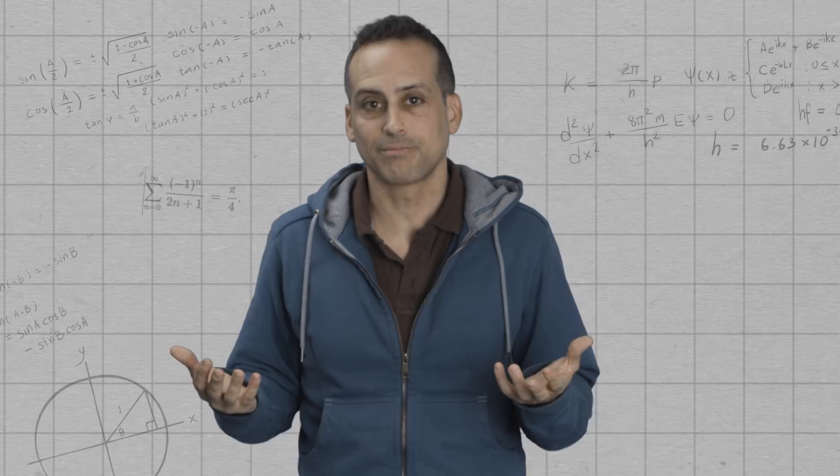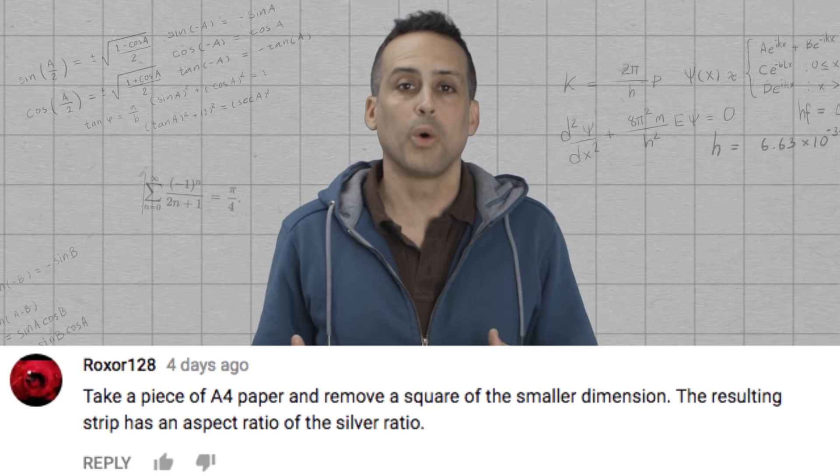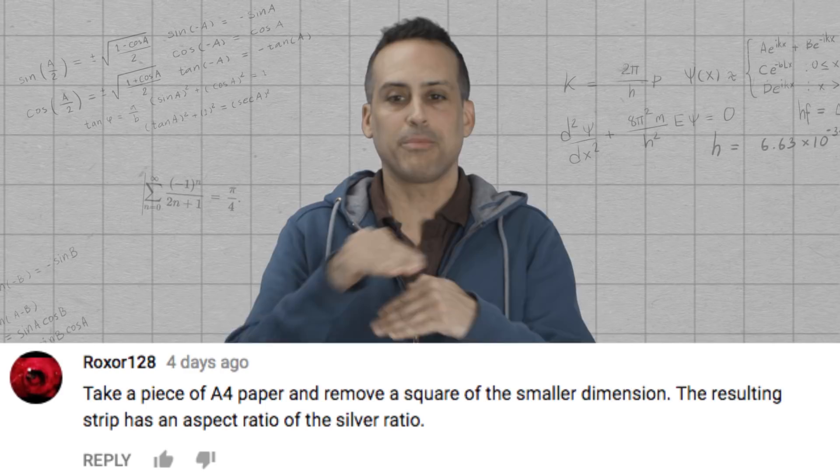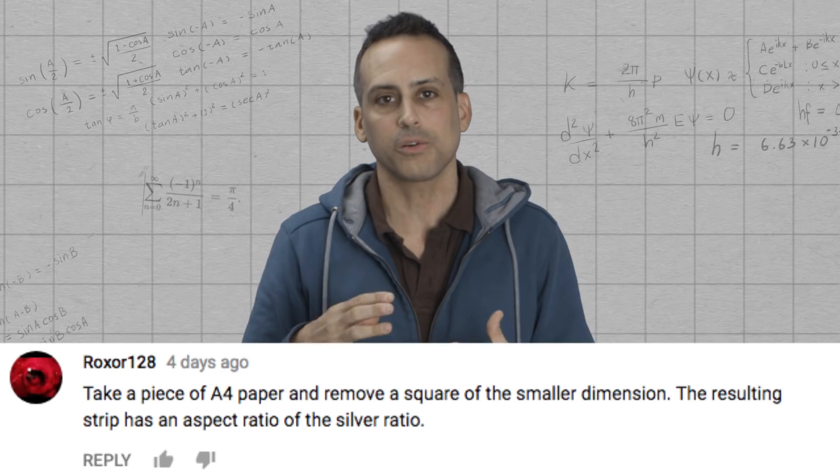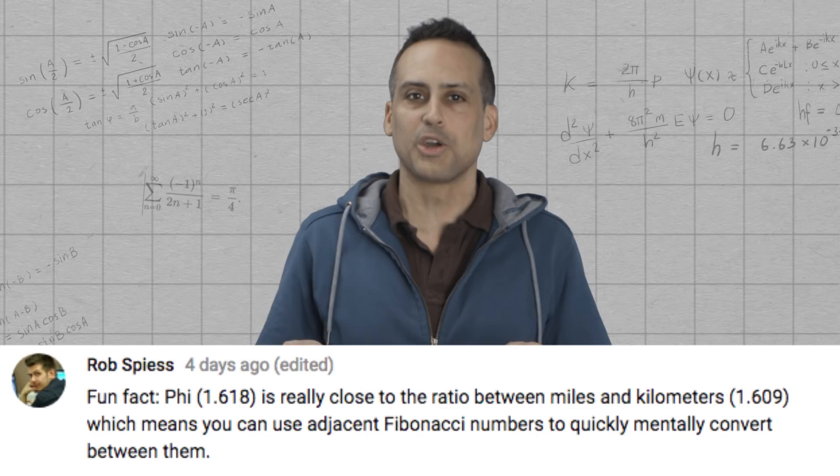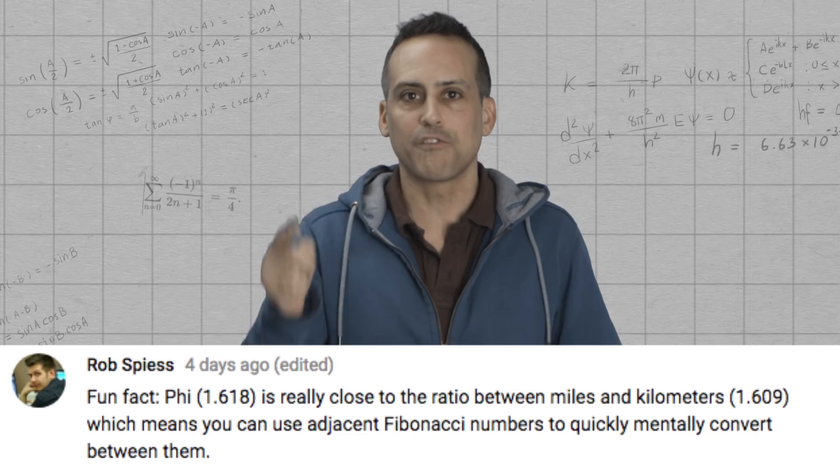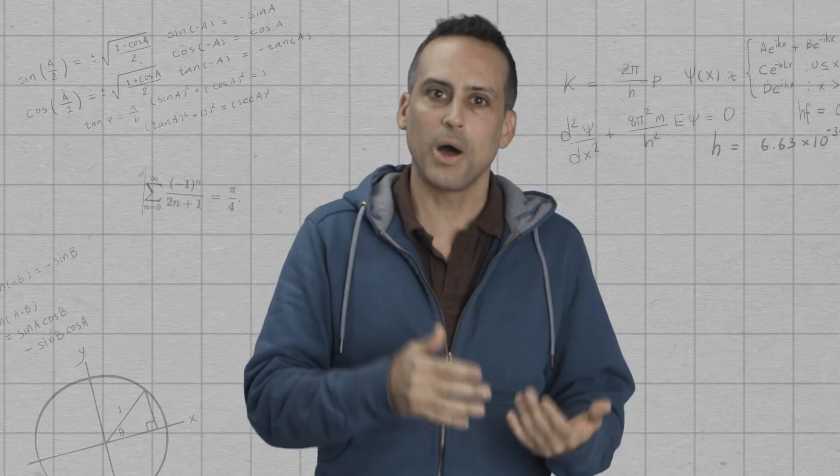Some of you pointed out some fun facts about the metallic ratios that I hadn't mentioned. Roxwell 128 correctly points out that A4 paper, actually all A series paper, always has an aspect ratio equal to the silver ratio. And that's part of what allows that paper to be infinitely subdivided and always be getting just scaled down versions of each other. And Rob Spice pointed out one of the coolest facts about the golden ratio that I didn't know. Namely, that the golden ratio is very close to the conversion factor numerically between kilometers and miles, which means you can use successive Fibonacci numbers to convert from miles to kilometers or vice versa. So for instance, three miles is approximately five kilometers. 21 miles is 34 kilometers. That's awesome.